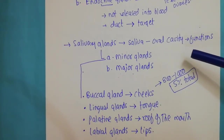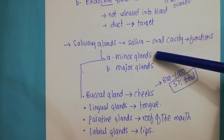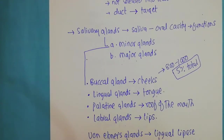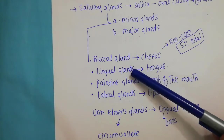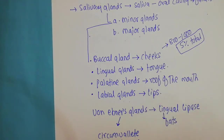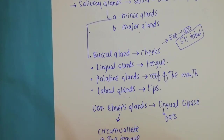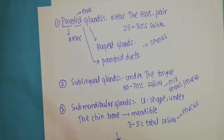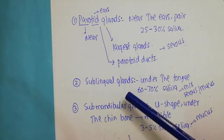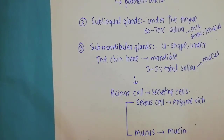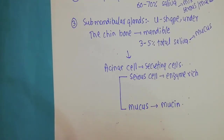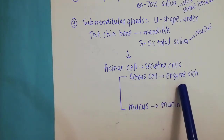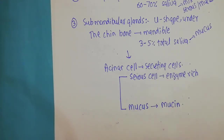There are two types of salivary glands. The minor glands produce a very small amount of saliva, about five percent. Important minor glands include the buccal, lingual, palatine, and labial glands. One important minor gland is the von Ebner's gland, which uses lingual lipase responsible for the breakdown of fat. The major salivary glands include the parotid gland near the ears, the sublingual, and the submandibular glands. The secreting cells in all these glands are called acinar cells, divided into serous cells, which produce enzyme-rich fluid, and mucous cells, which produce mucins.